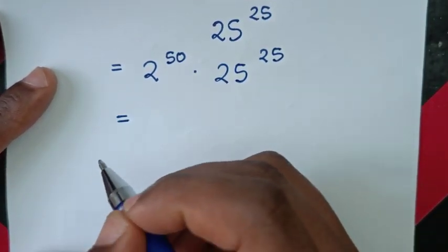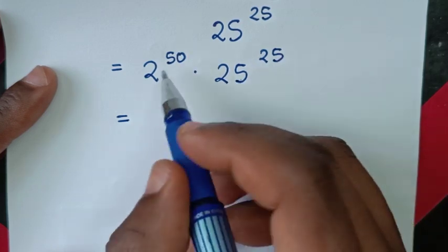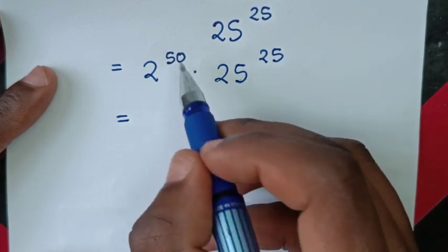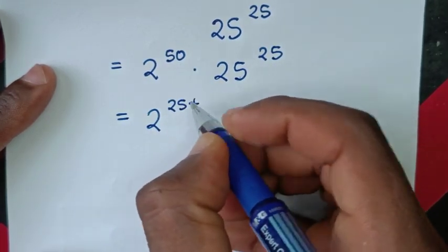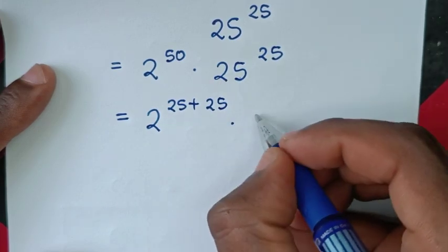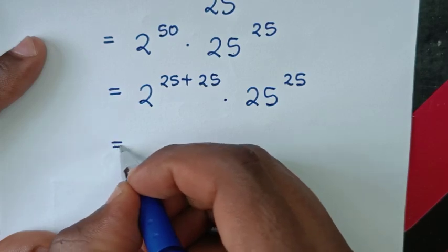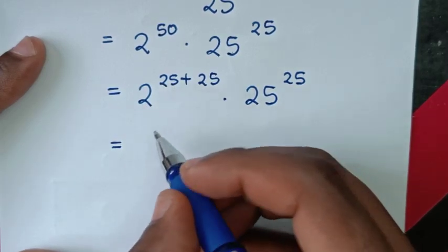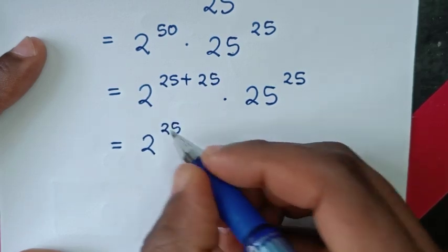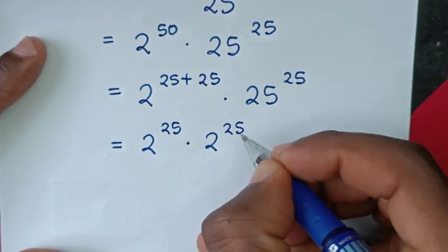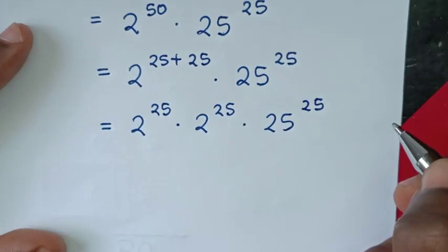Now we have different bases and different powers. We make the common power 25, so 2 power of 50 is the same as 2 power of 25 plus 25, times 25 power of 25. Then 2 power of 25 plus 25 equals 2 power of 25 times 2 power of 25, times 25 power of 25.